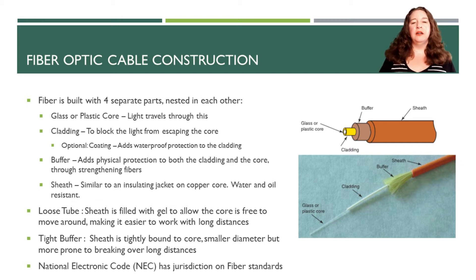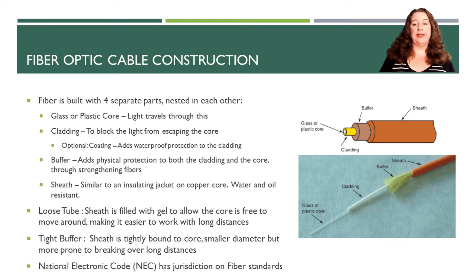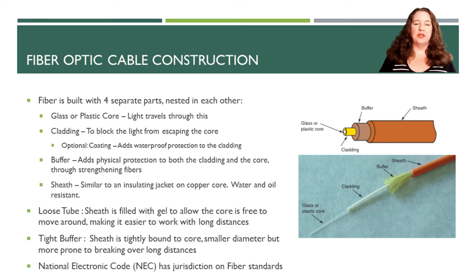On the outside, we have what's called our sheath — an insulating jacket that is both water and oil resistant, protecting it when it gets wet or has oil or other materials touching it. When building fiber optic, you have the option of having your sheath filled with a gel, called a loose tube, that allows the core to freely move around. This makes it easier to work with over long distances because you're less worried about the core breaking. If you want a smaller diameter, you can use a tight buffer, where the sheath is bound tightly to the core, making it less malleable but suitable as well.